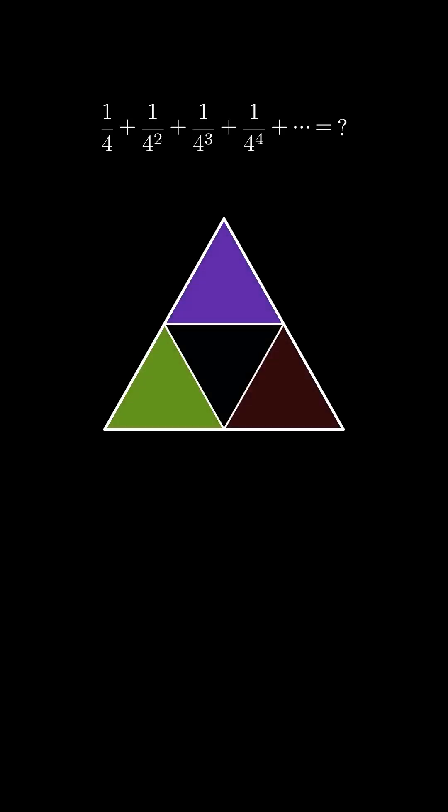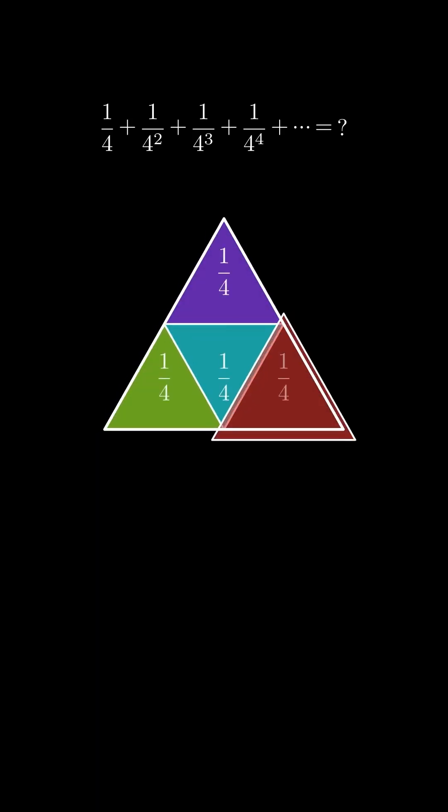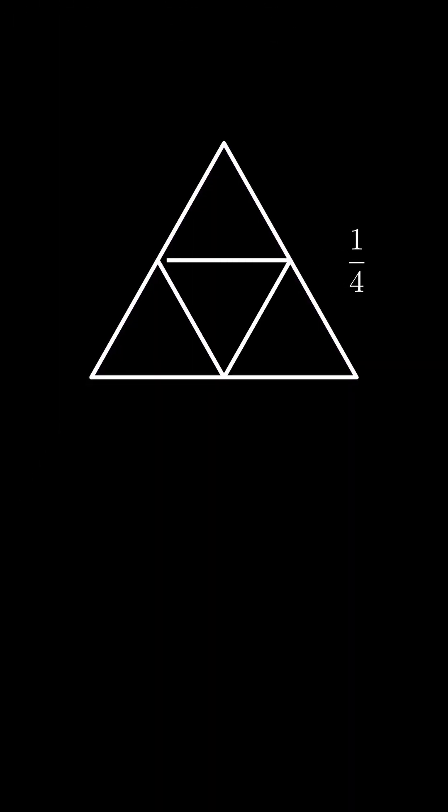Divide this triangle into four equal parts. Each part is one-fourth of the original triangle. Now, take one of these triangles and divide it in the same way.